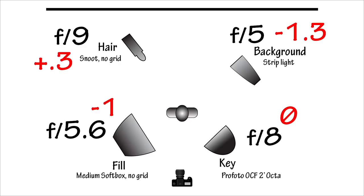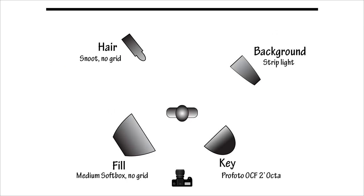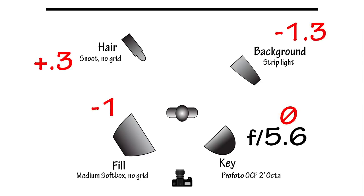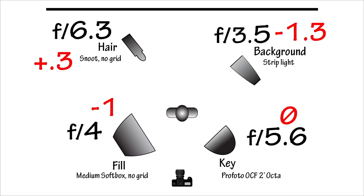These numbers show us the exposure value differences between the key light and all of our other lights. The key light is always zero because there is no difference between the key and itself. In this example, the fill light meters one stop lower than the key, the hair light is one-third stop brighter, and the background is one and a third stops lower. We could eliminate our metered values and create a chart that looks like this. Once we know the relative values, it's easy to make changes if we need to. For instance, if our key light metered at f5.6...